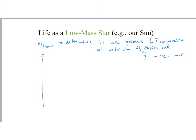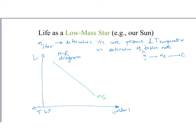Remember that HR diagram. We have luminosity here, and temperature goes this way — it increases this way. So we have hot here, colder. And remember that main sequence — this is where the stars live. We have the high mass stars, they're more luminous, and then we have the low mass stars. Somewhere here are actually the brown dwarfs, which are the failed stars.